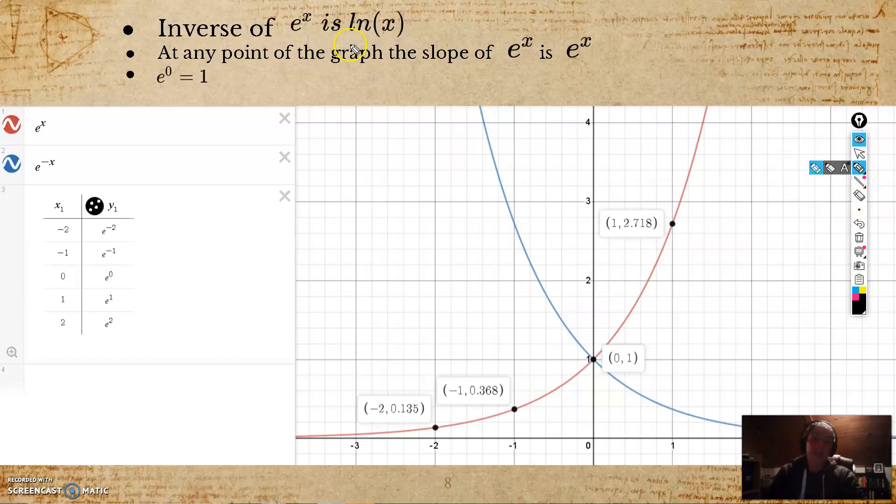So what are some other properties of e to the x? Well, like we've said already, the inverse of e to the x is ln of x, so it does have an inverse, which implies it is a one-to-one function. At any point of the graph, the slope of e to the x is, in fact, e to the x. This is the coolest thing ever. Anywhere on the line, if I try to take the slope at any point on this line, the slope is equal to e to the x. So the slope of the graph is basically the function itself, which is really cool and really useful in things like calculus. And like any exponential, e to the 0 is equal to 1. So it does follow these same rules.